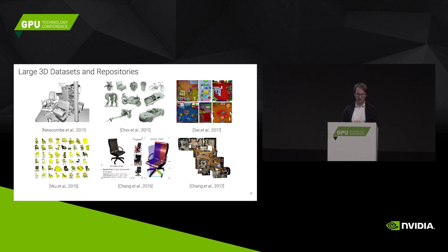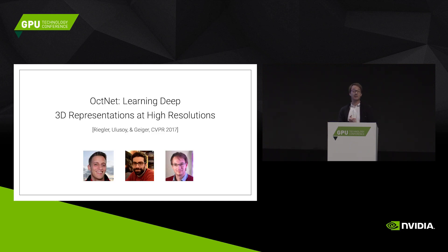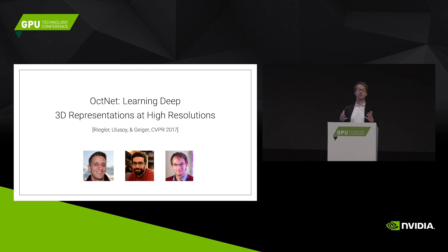We want to use deep learning, and deep learning requires large 3D datasets — but these are becoming more and more available these days. There are datasets recorded with a Kinect scanner of whole apartments and even whole buildings. There's also datasets like ShapeNet, derived from Google Warehouse, where there's a lot of 3D CAD model information available. The guiding question is: can we learn 3D reconstruction from data? In that context, I'd like to present two recent projects: the first on how to efficiently model 3D convolutional neural networks, presented at CVPR, and the second on how to use these representations to do 3D reconstruction, presented three days ago at a 3D vision conference.